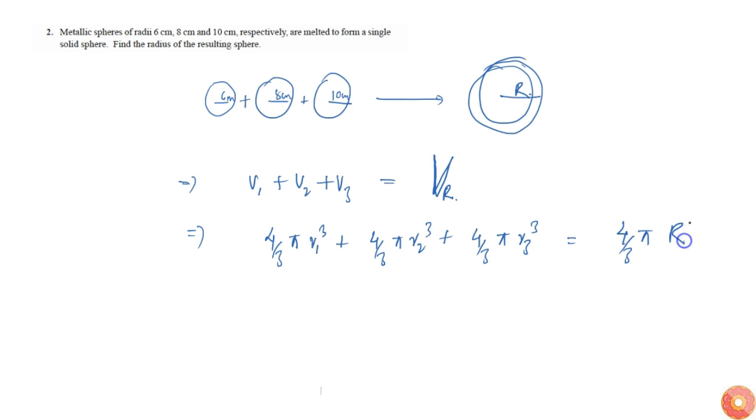Four by three pi can be canceled out from all terms, so we get r1 cubed plus r2 cubed plus r3 cubed equals capital R cubed.